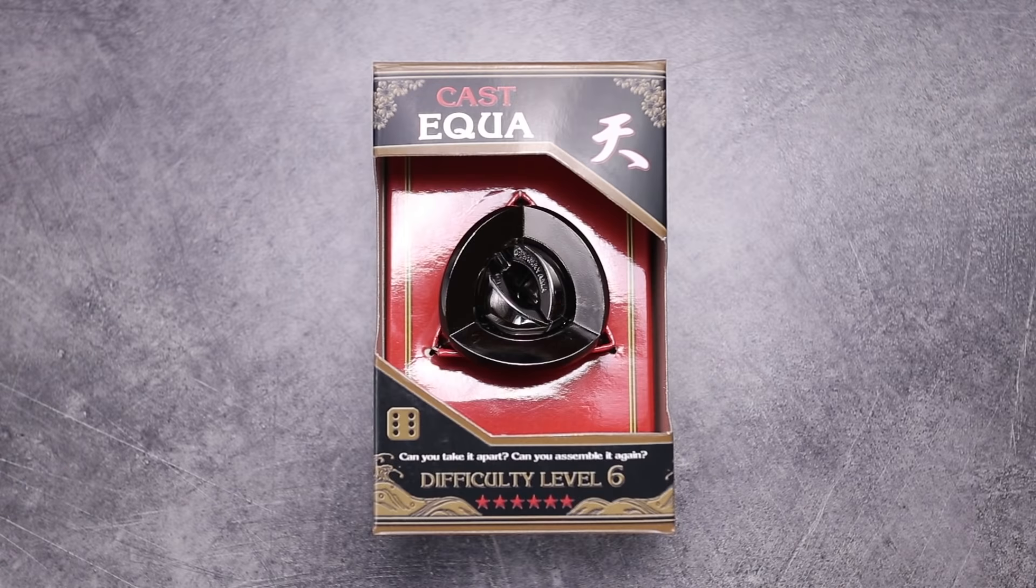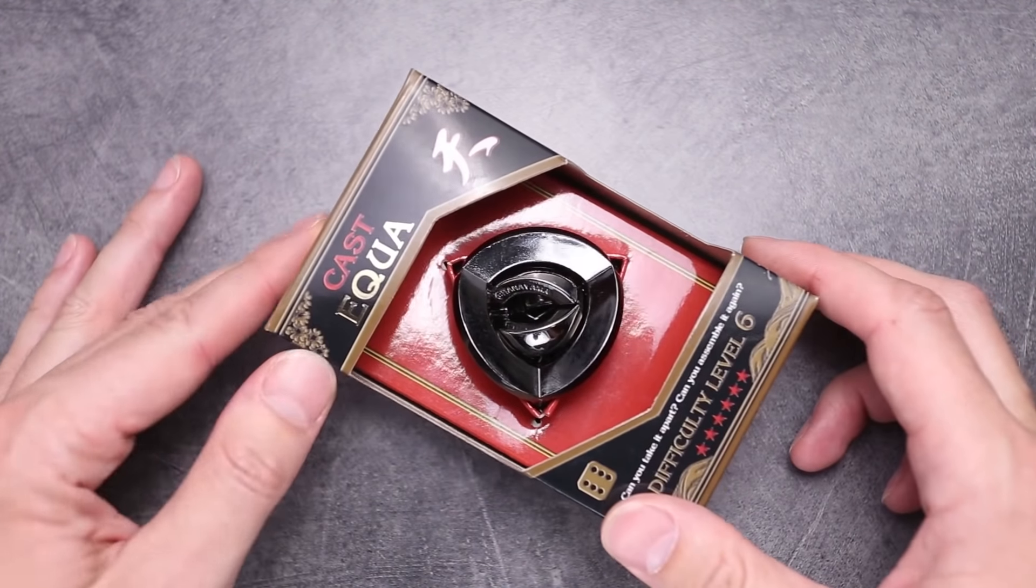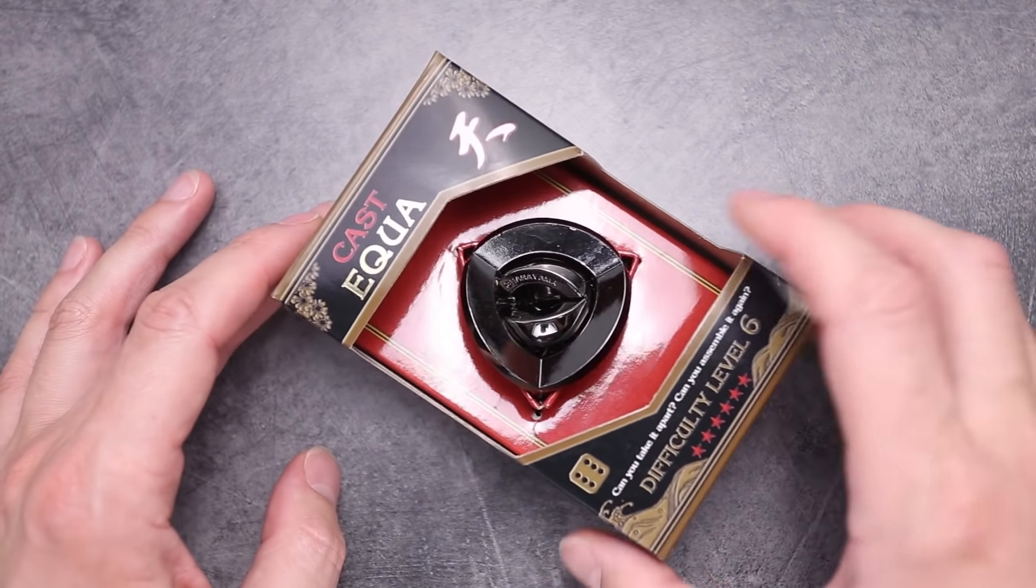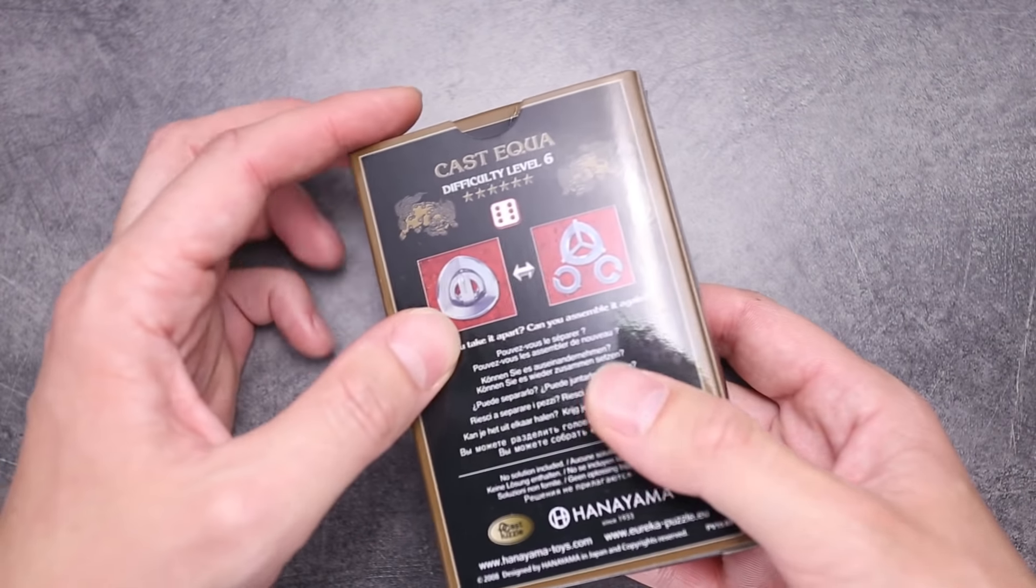Hi there! This is the Puzzle Guy and today I will show you how to solve Equa puzzle by Hanayama. The difficulty level of this puzzle is 6, so it's one of the most difficult Hanayama puzzles. And as always the goal of this puzzle is to take it apart and to assemble it again.